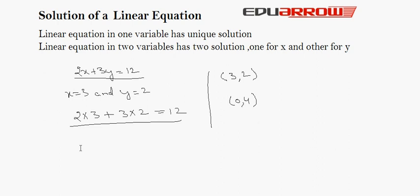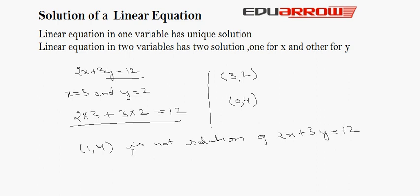On the other hand, (1, 4) is not a solution of 2x plus 3y is equal to 12, because putting x is equal to 1 and y is equal to 4, we get 14, which does not satisfy our equation — it should be 12, not 14.